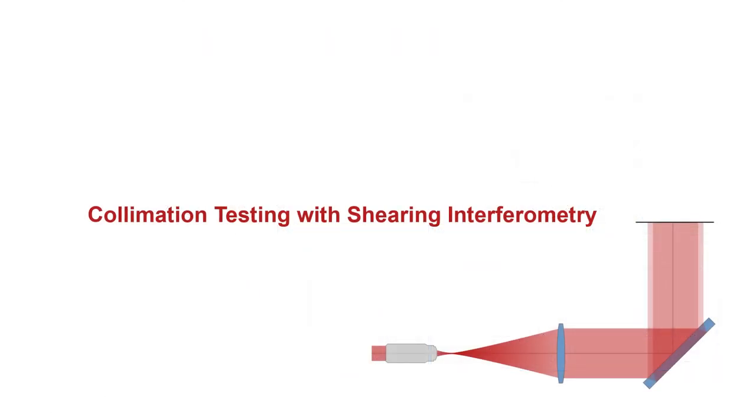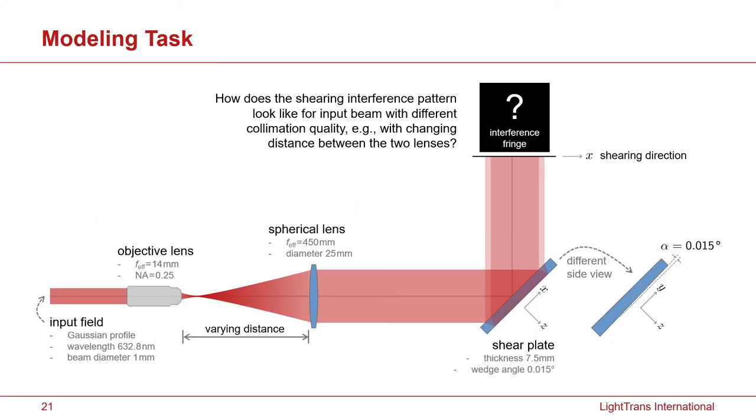As a third example in my talk, I'd like to show an interferometric system. In this case, we choose to show a shearing interferometry. In this case, we first build up a beam expansion and collimation system. The input Gaussian has a relatively small diameter, only one millimeter.